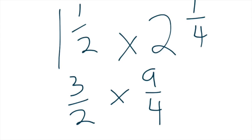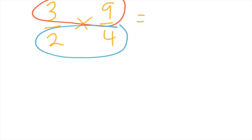So we have three halves times nine quarters. We're now going to go into multiplying the top against the top and the bottom against the bottom.